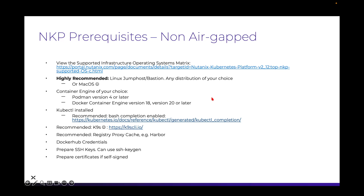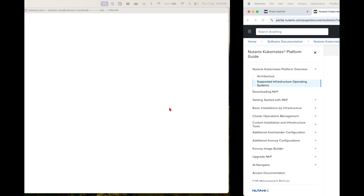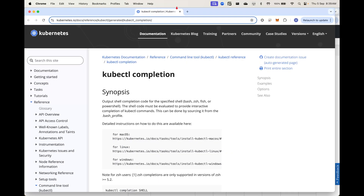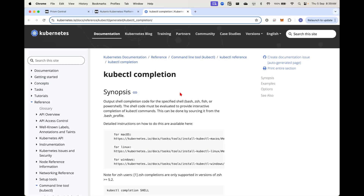We obviously need to have kubectl installed because we definitely want to log into the clusters to perform any configuration tasks or view logs. I would also recommend enabling bash completion — there's a URL here that leads to the official documentation on how to perform kubectl completion. I'll have this linked in the description as well.